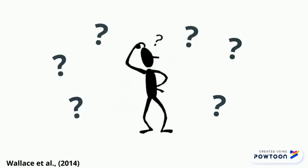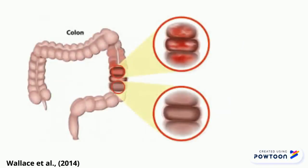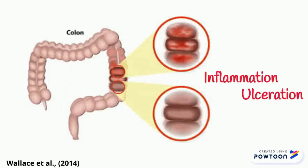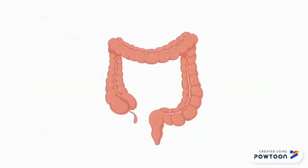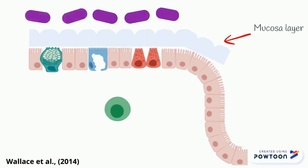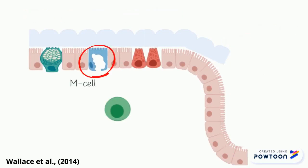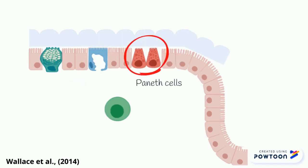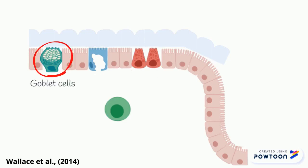However, the underlying pathophysiology can be described as the inflammation and alteration of the colon's mucosal lining. Here are the intestinal epithelial cells and the mucosa layer with bacteria on its surface. The M cells are specialized epithelial cells of the mucosa. Paneth cells secrete compounds that create your first line of defense, and goblet cells produce and secrete the mucus.